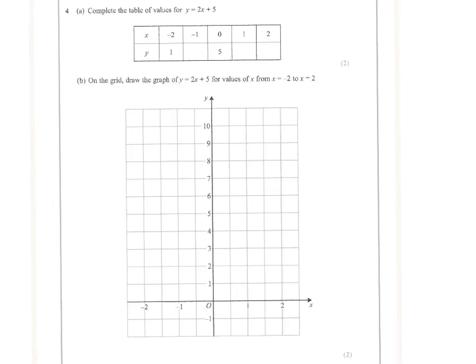We're going to complete the table of values for y equals 2x plus 5. We've got the missing value of y when x is minus 1, the missing value of y when x is 1, and when x is 2.